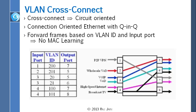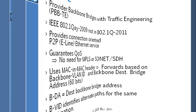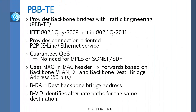A VLAN cross connect is a device — not a network — where you can go from one port to another port based upon VLAN ID. If you are coming on port 1 and your VLAN ID is 200, you go to output port 7. If you are coming on port 2 and your VLAN ID is 201, you go to port 5, and so on. This is basically a device that some company must have designed. It doesn't require any standardization.